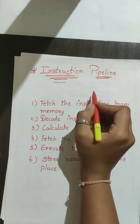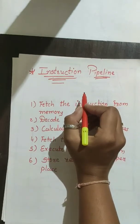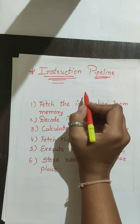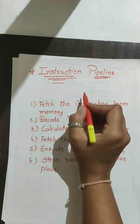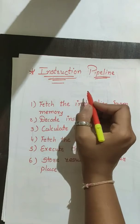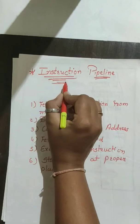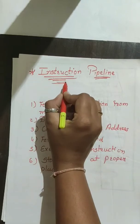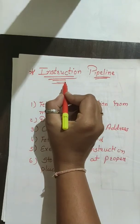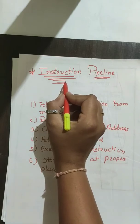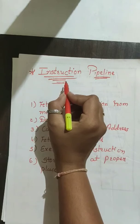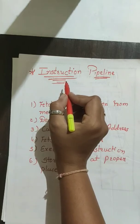Previously we have already seen arithmetic pipelining, where simultaneous operations are performed to minimize time. Similarly, we can use the same concept with the instruction stream. If we divide our instruction stream into segments, different segments can perform different parts of instruction execution.